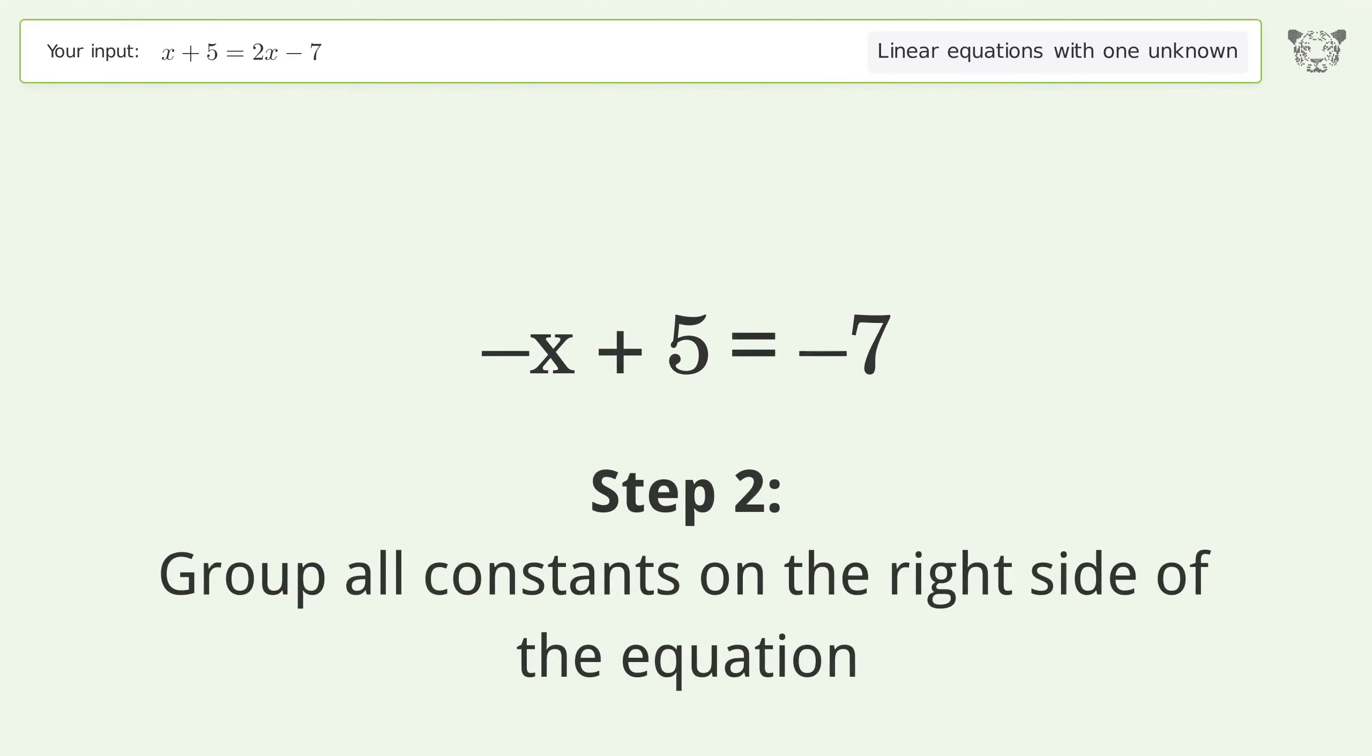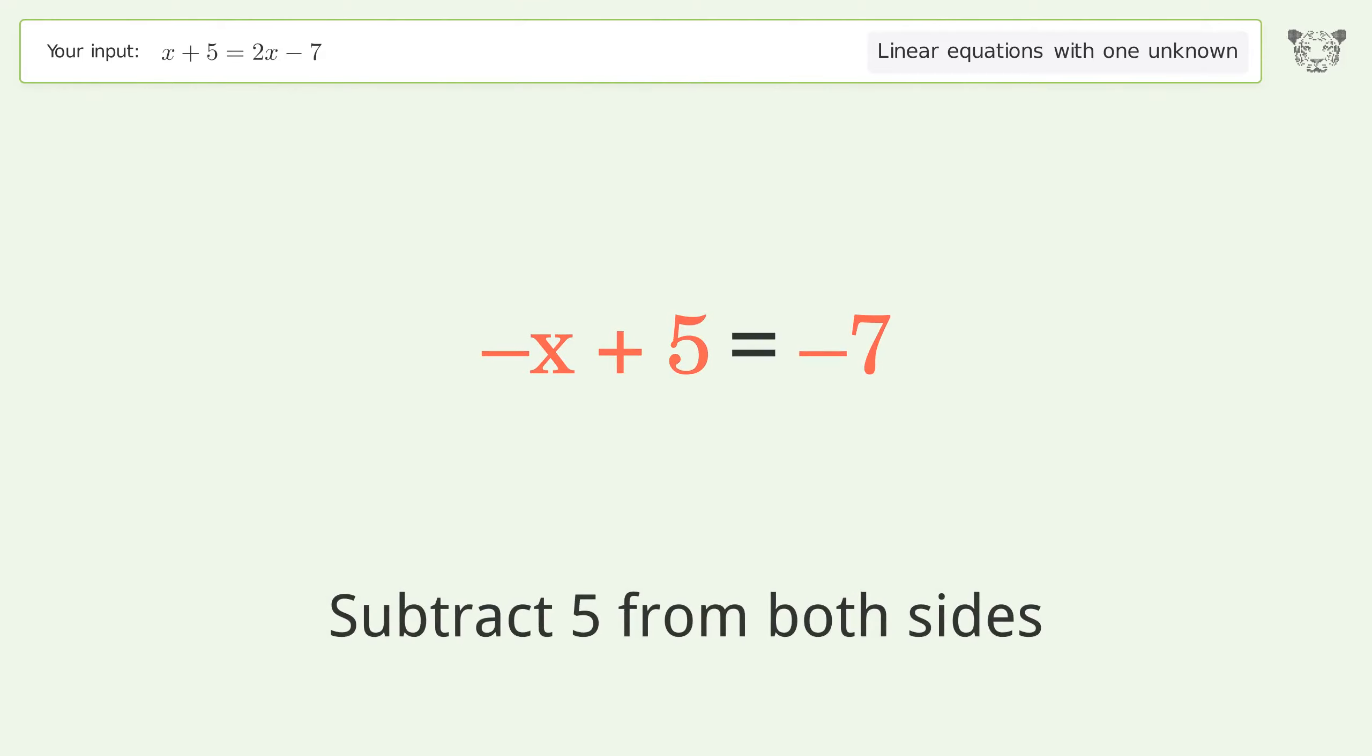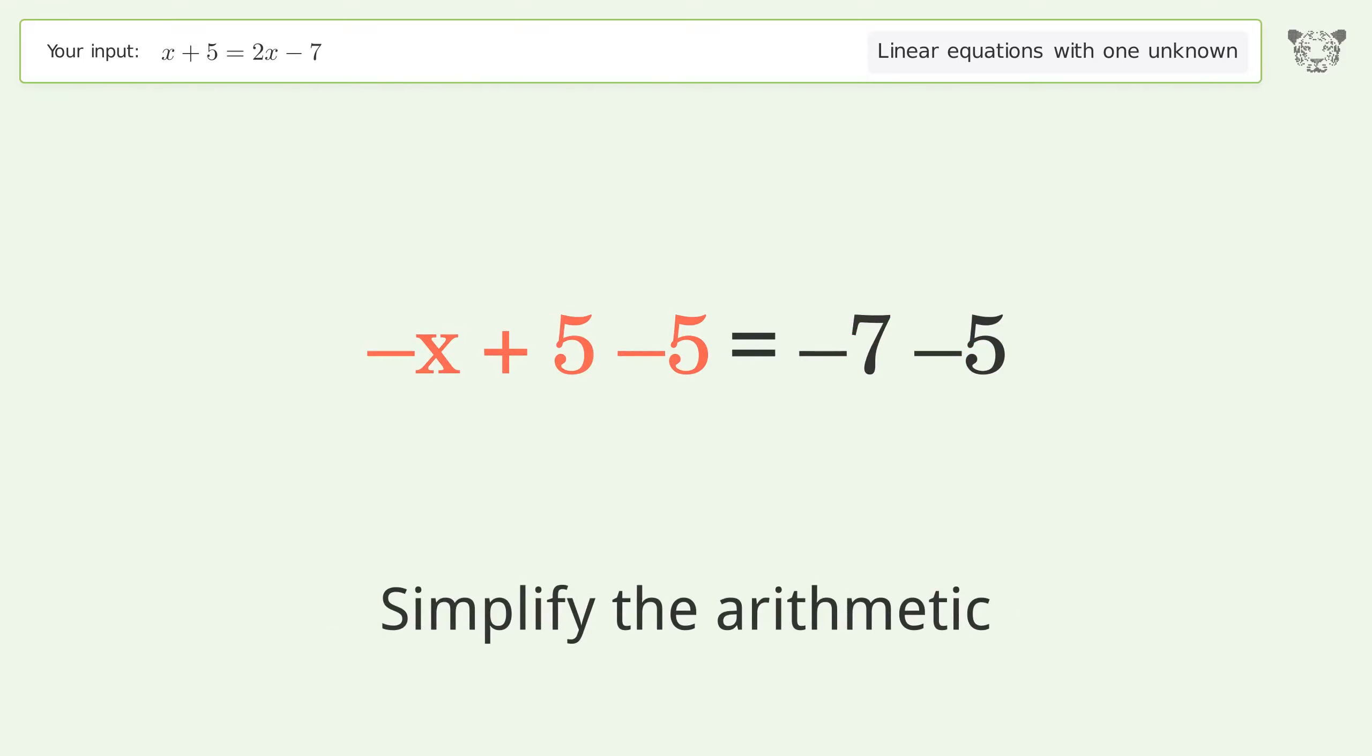Group all constants on the right side of the equation. Subtract 5 from both sides. Simplify the arithmetic.